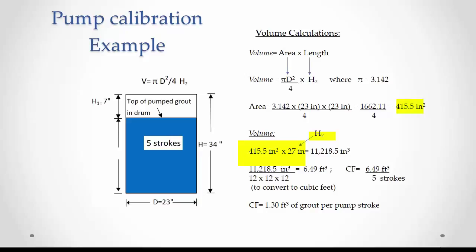This area multiplied by the height H₂ of 27 inches is 11,218.5 cubic inches. We divide this by 12 cubed to obtain cubic feet. This gives us 6.49 cubic feet.